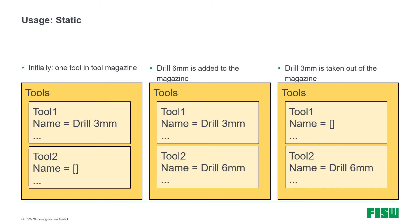If I now add the six millimeter tool to the tool magazine, I will fill in all of those component values, so the second tool node's components now represent the six millimeter drill. In the third step, I remove the three millimeter drill, and I represent that by emptying all the component values of its node. The node stays there — the tools list still has two entries — but the first tool entry doesn't contain any values anymore. The second node is unchanged; the six millimeter drill is still in the machine.